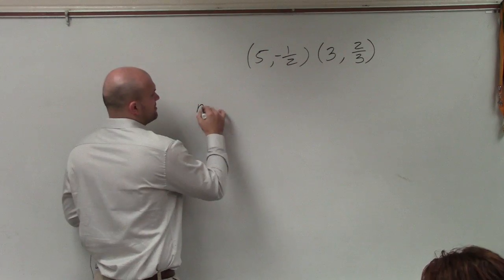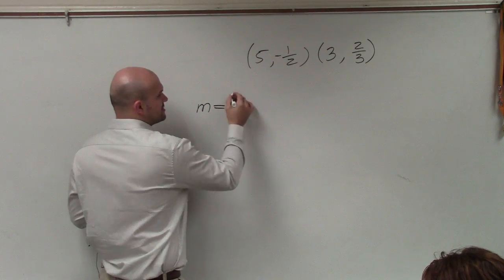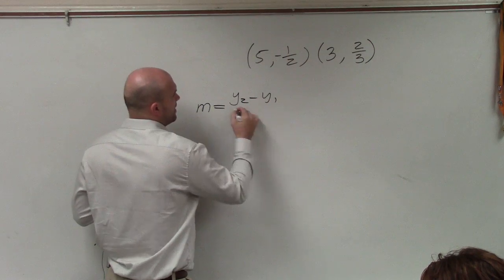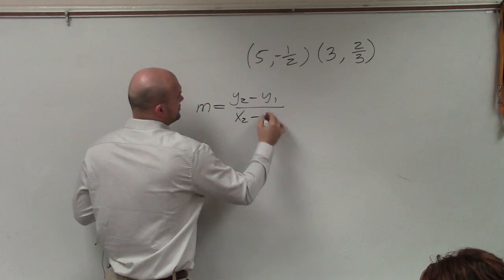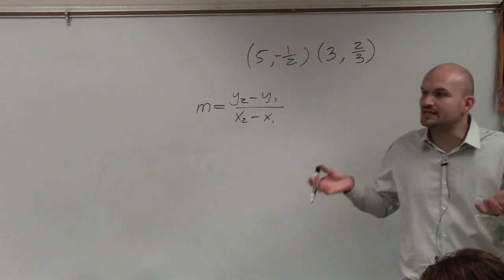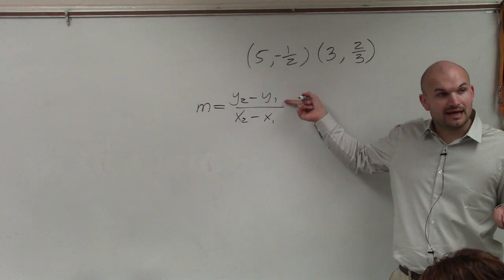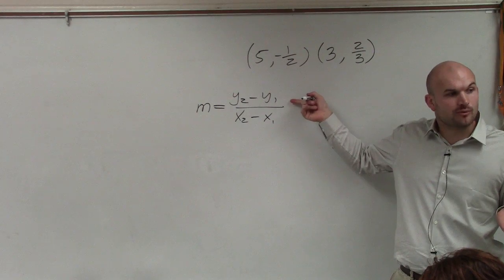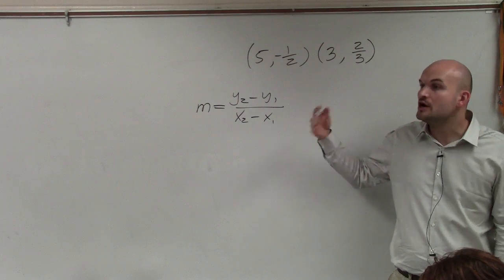And to do that, there's a simple formula where m, which represents our slope, is going to be y2 minus y1 over x2 minus x1. So basically, what the slope represents is the change in your y-coordinates between the change in the x-coordinates for any two points.